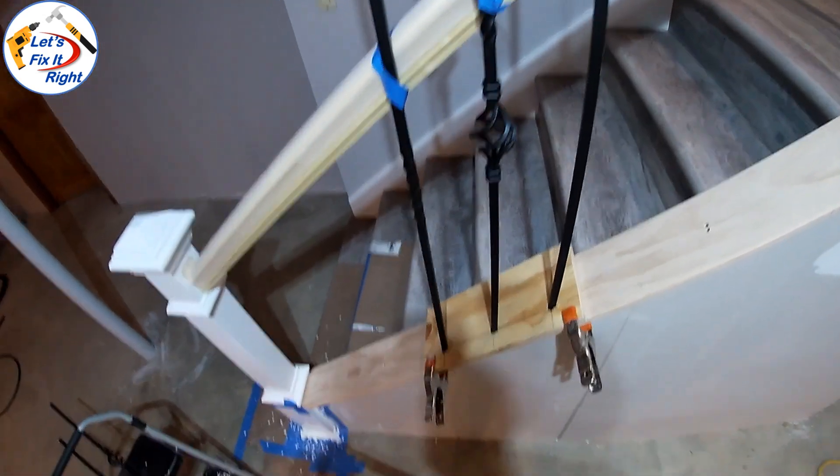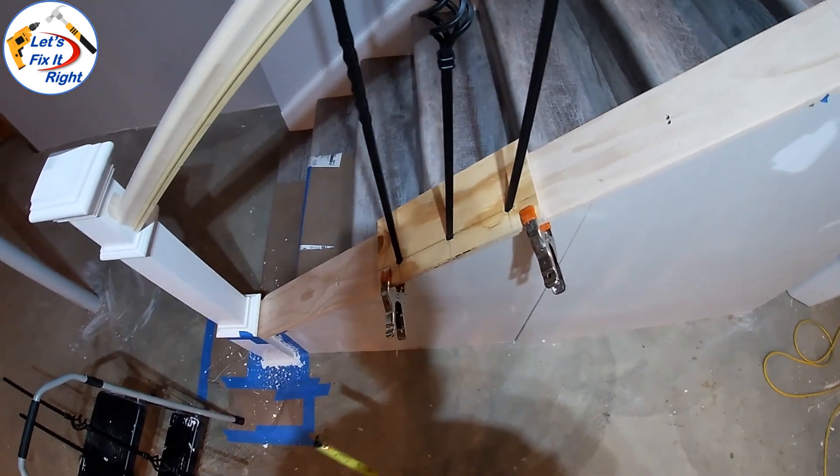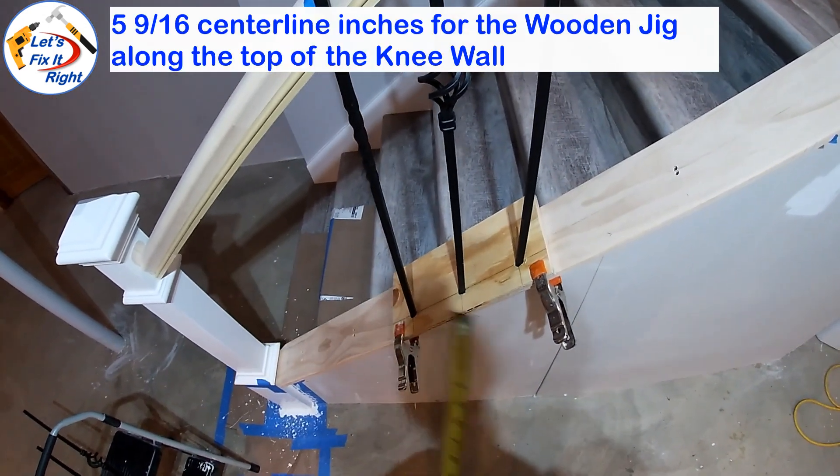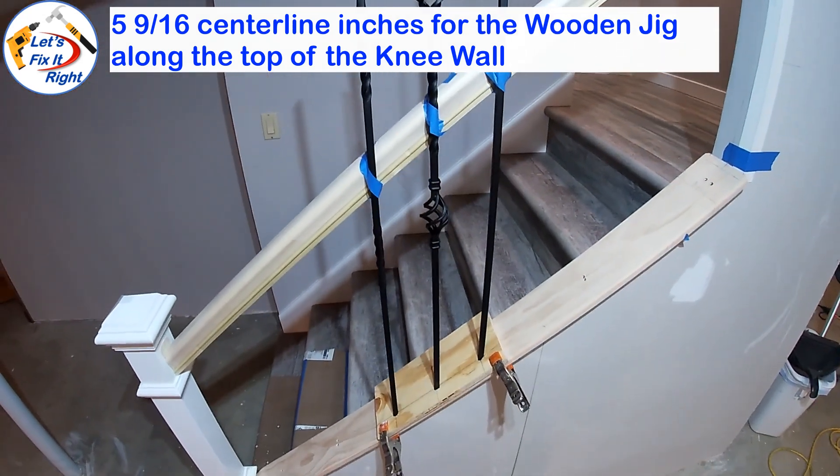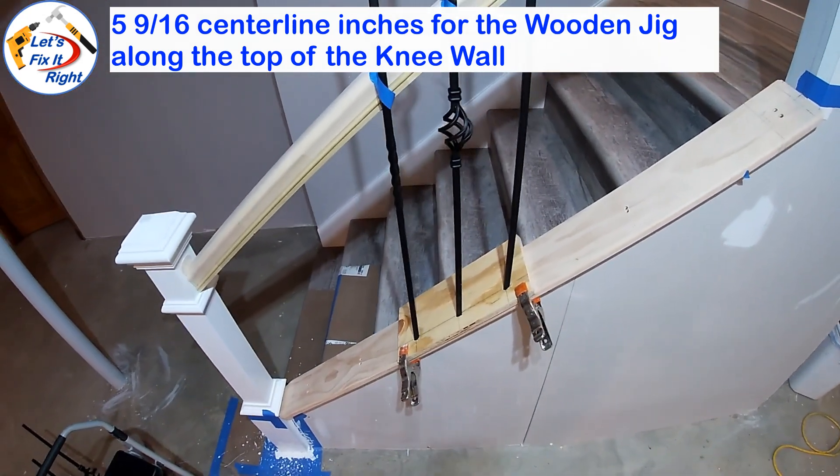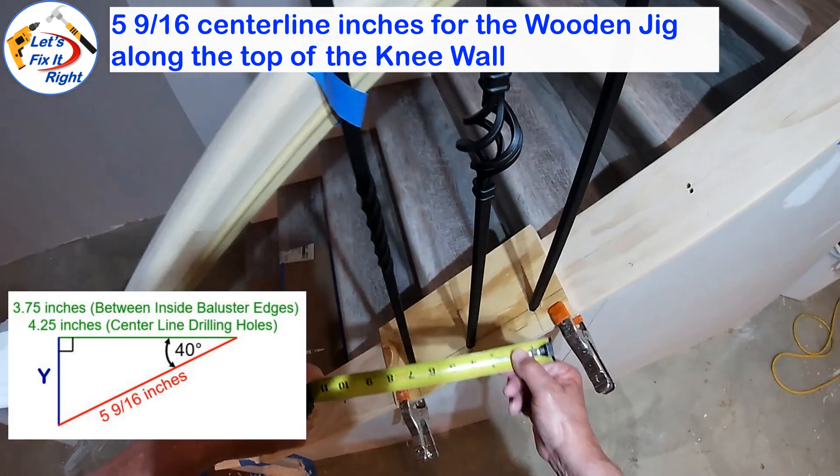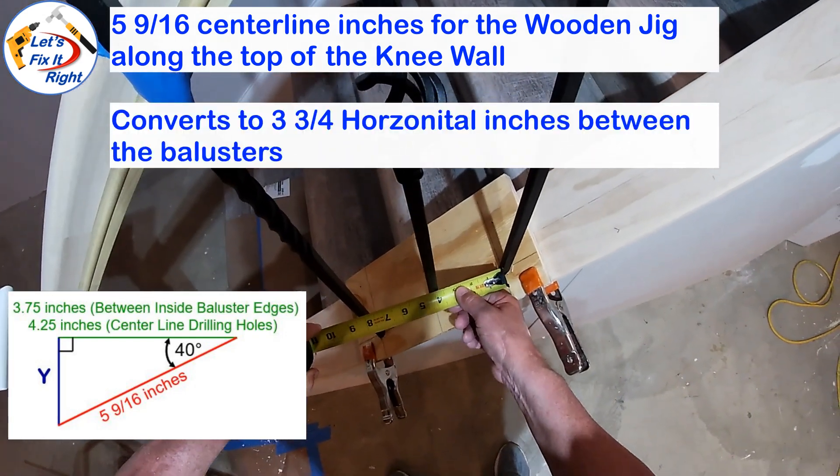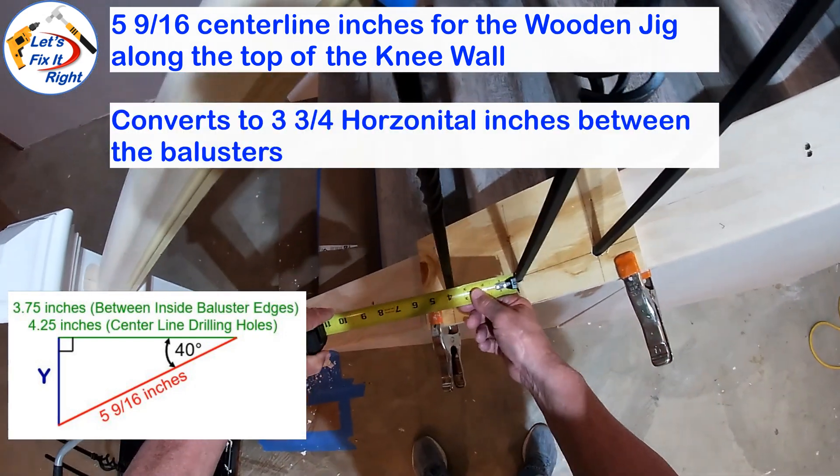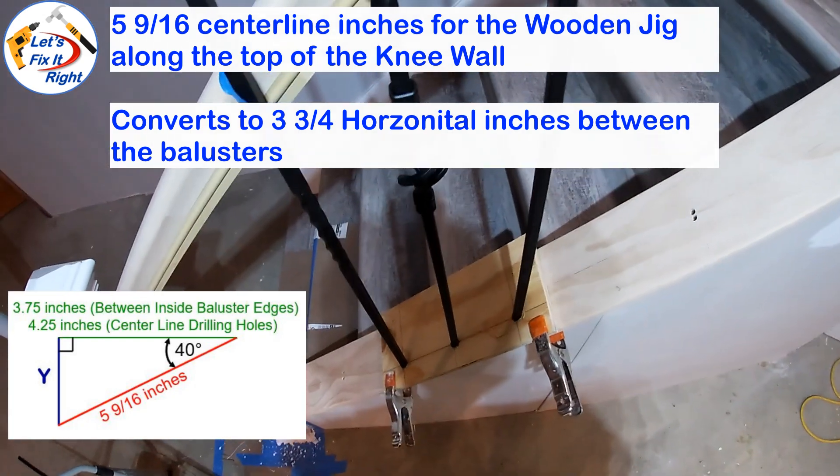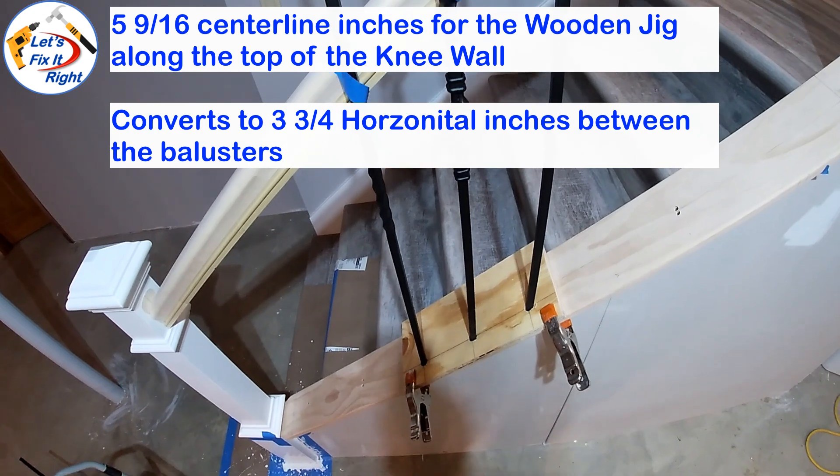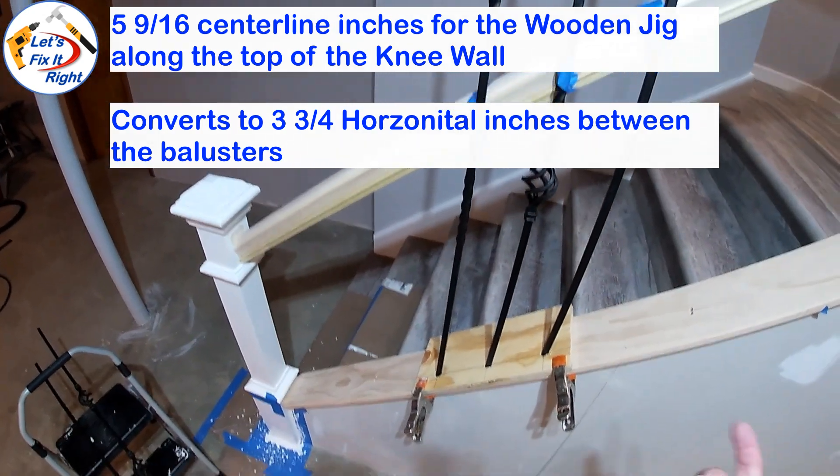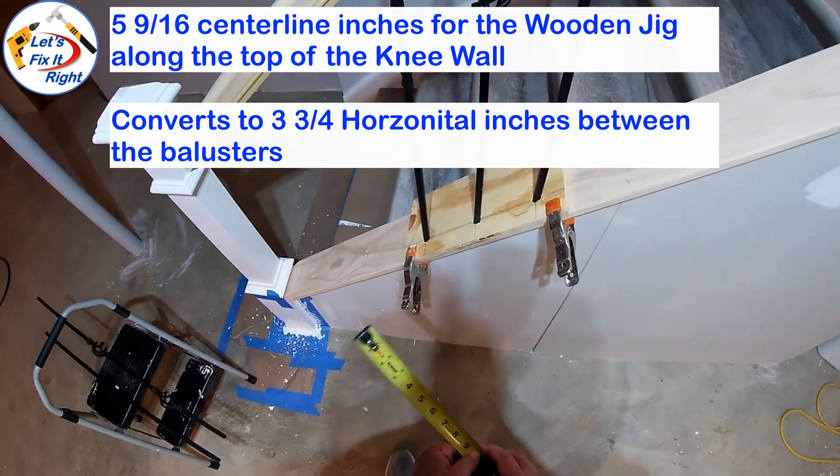To ensure that I don't ruin the top of my knee wall made with high grade pine I performed this test with a scrap piece of plywood with baluster holes drilled 5 and 9/16 of an inch apart. As you can see these balusters are 3.75 inches apart which meets our code requirement so it's okay to start drilling our baluster holes at this time. Consequently my trig approach works perfectly.